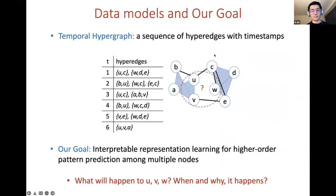Now, in this work, we use temporal hypergraphs to model the higher-order interactions. This hyperedge may appear across time, and each hyperedge may connect more than two nodes simultaneously.